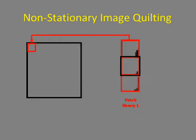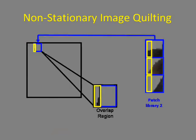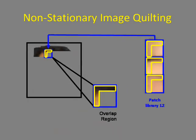To synthesize a new face, we place new patches down one by one. We pick the first patch randomly. The second patch is also chosen randomly, but now from the subset of patches where the overlapping region agrees closely.